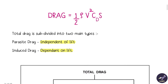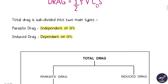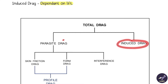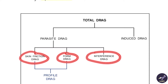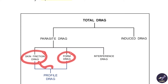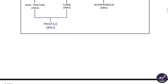Total drag is divided into two main types: induced drag, which is dependent on lift, and parasite drag, which is independent of lift. Parasite drag is further divided into skin friction drag, form drag, and interference drag. Skin friction and form drag together are also known as profile drag. We will now see all the drag types in detail.